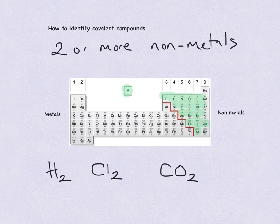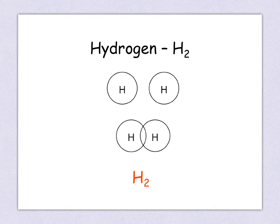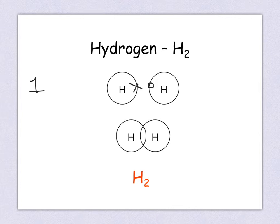Let's look at some examples of how we would draw dot and cross diagrams. Here is our first example — hydrogen. In the outer shell, the complete electron configuration for hydrogen, we have one electron. I'm going to draw them on the left hand hydrogen as a circle, and on this one as a cross. To get a full outer shell — remember two electrons in the first shell to make it full — instead of transferring like ionic, what happens is they share. So we overlap them together, and then we count the shared electrons for each atom.